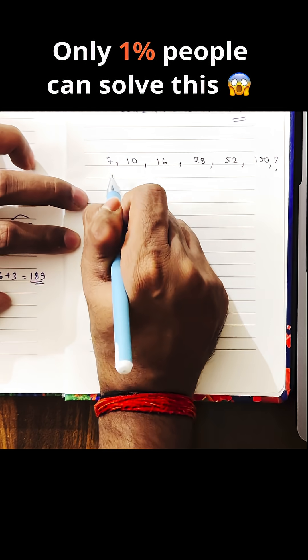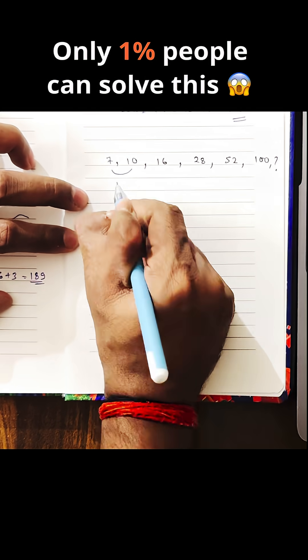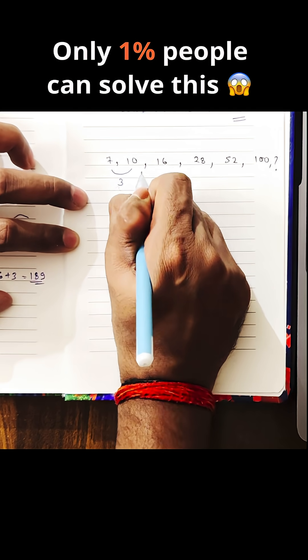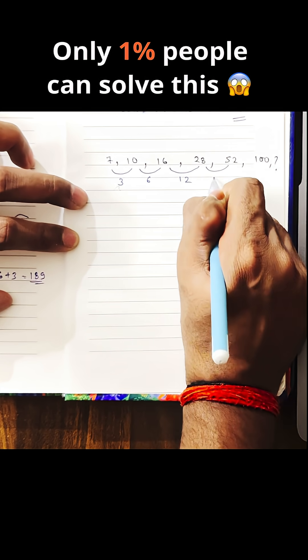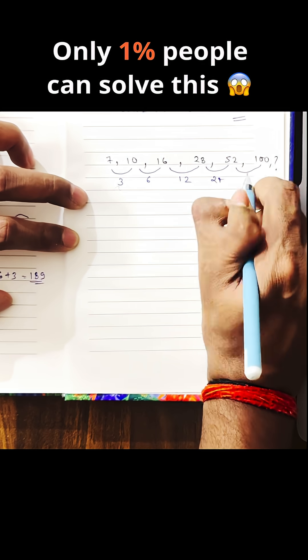So, here the logic is, you can see the difference here. What is the difference? 3, right? Here, what is the difference? 6. Here, what is the difference? 12. Here, what is the difference? 24. What is the difference? 48.